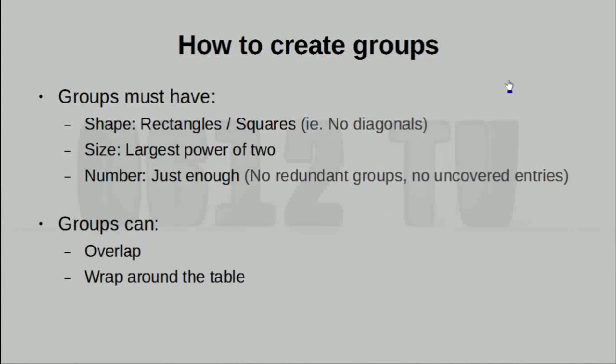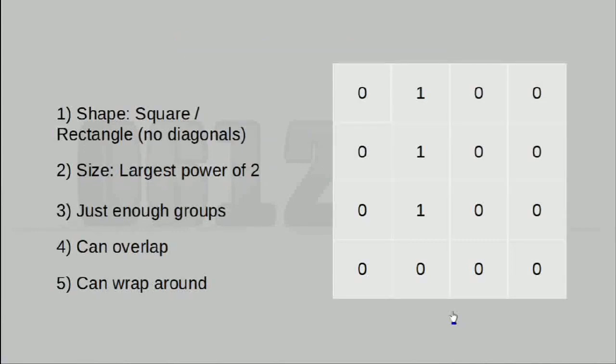Essentially, when we actually create groupings, there are a few important things we have to do. For example, the shape of our groups must be either rectangles or squares. What this means is we cannot actually group up something diagonally. At the same time, the size of each group must be a power of 2, and it must be maximized. In terms of the number of groups, we cannot have redundant groups, and at the same time, no value of 1 should not be covered by any group at all. Luckily, groups can overlap, and groups can actually wrap around the edges of the table.